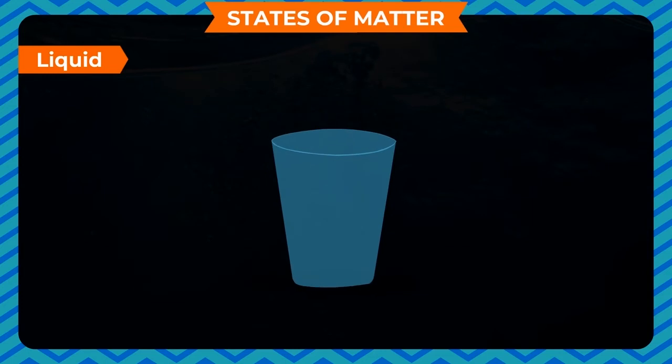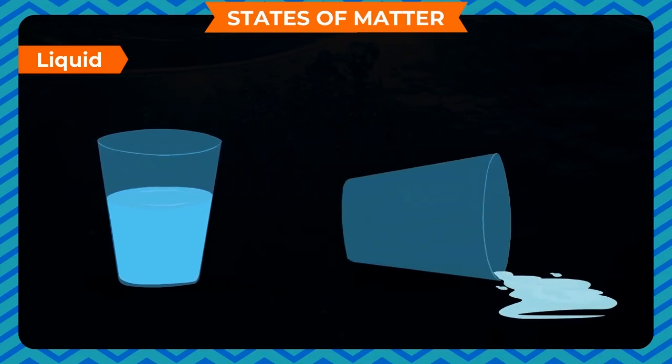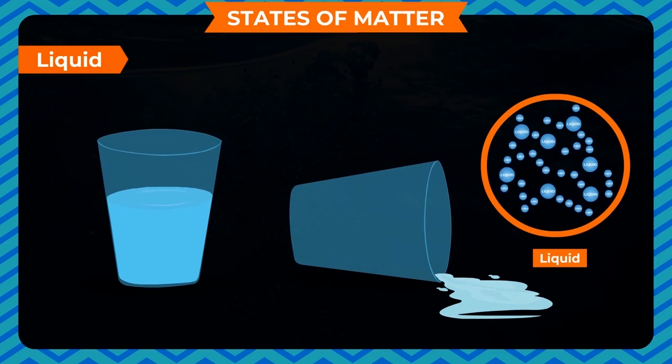If we pour some water into a glass, it will take the shape of the glass. Liquids have ability to flow. In liquids, the molecules are loosely packed and have space between them. The molecules can move around a little freely. Liquids have a fixed volume.